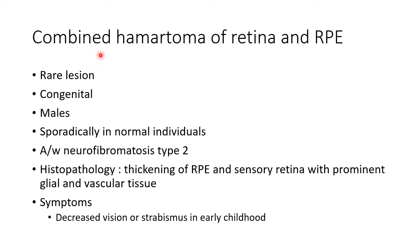Now let us discuss about combined hamartoma of retina and retinal pigment epithelium. It is a large lesion, usually congenital, and usually affects males. It can occur sporadically in normal individuals or it can be associated with neurofibromatosis type 2. Histopathology shows thickening of retinal pigment epithelium and sensory retina with prominent glial and vascular tissue.